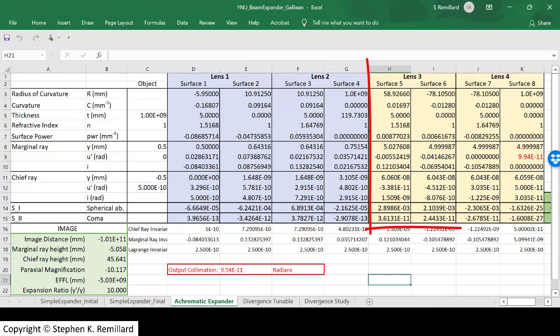And lens 2 is replaced with lens group 2, which includes lens 3 and lens 4. These are achromatic doublets, and if you want to see how that's designed, you can see my video on axial color.